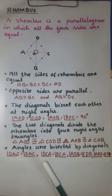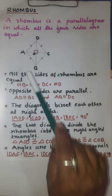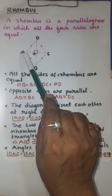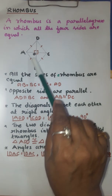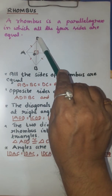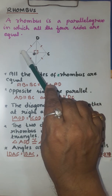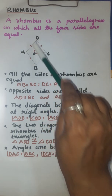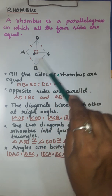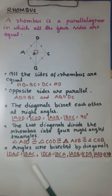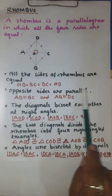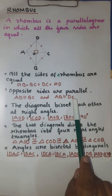Opposite sides are parallel. Opposite side AB is parallel to opposite side DC, and opposite side AD is parallel to opposite side BC. So opposite sides are parallel.